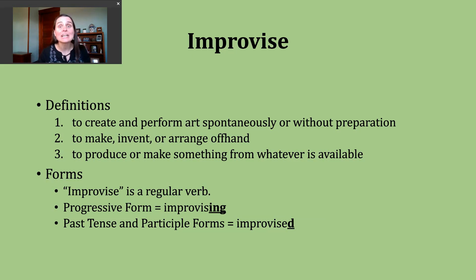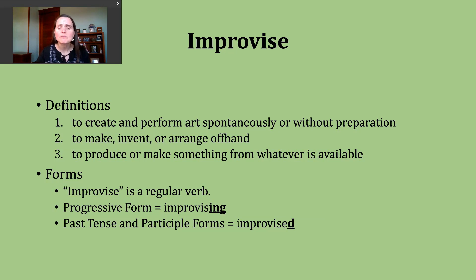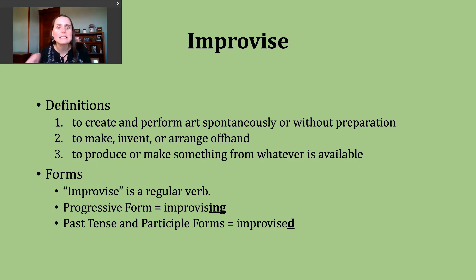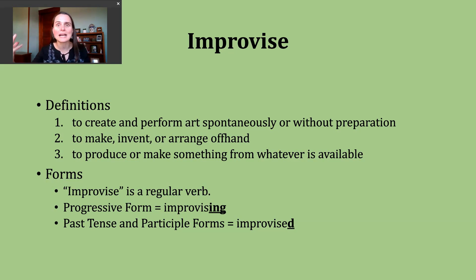A second way you might hear improvise used is to mean to make, invent, or arrange offhand. We're going to connect that second definition to the third one, which is to produce or make something from whatever is available. With these definitions, I'm going back to that phrase 'without preparation' — you might think of making something up, inventing something, producing something without a specific plan, thinking on your feet, creating something without preparation or planning.